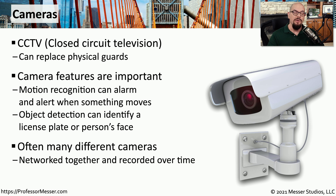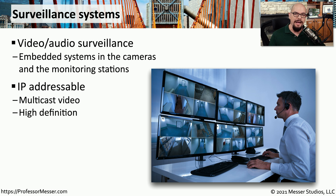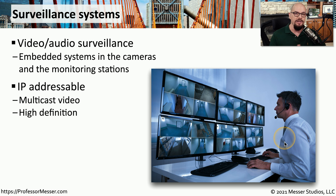Most of the time, you have multiple cameras that are all connected back to a central recording device, and you're storing that video for long periods of time. These multiple cameras are usually communicating back to these surveillance systems over your ethernet network, and you're usually accessing the cameras through an IP address assigned to the camera. This provides you with the ability to view many cameras at once and usually provides high definition visibility.